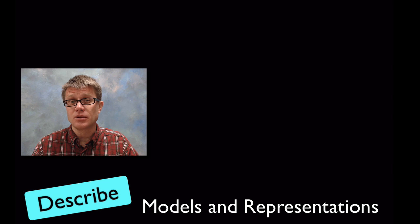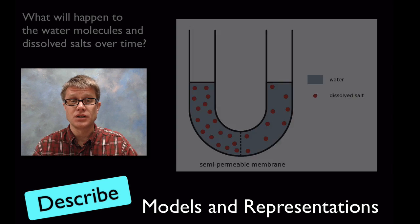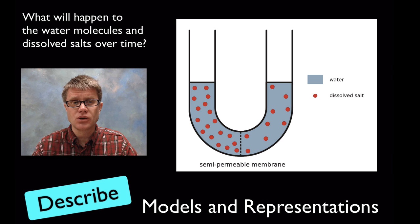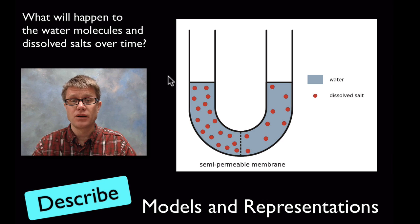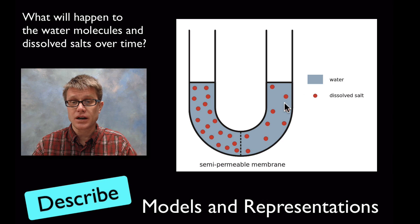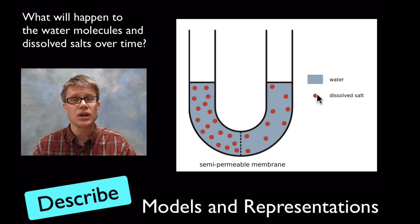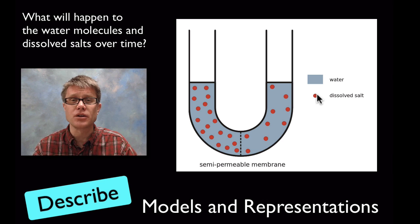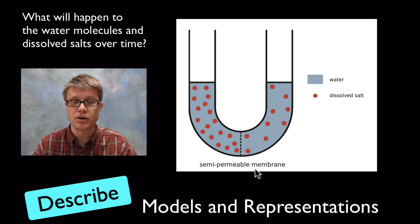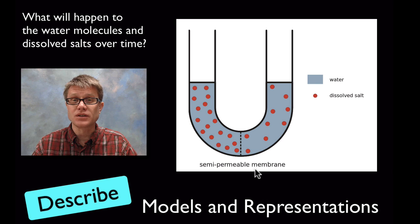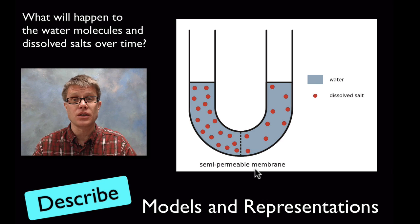Let's go to the next thing they'd like you to be able to do. They want you to be able to describe a model or a visual representation. Well here's a question. What will happen to the water molecules and dissolved salts over time? So we have a U tube over here on the side. You could look right here that we've got water which is going to be this bluish color. And then we have these dissolved salts. And so they're going to ask you what would happen over time? One other piece of evidence is that we've got a semi-permeable membrane down here. What does that mean? It's only going to allow certain things through. In this case it's only going to allow water to go through. So what would happen over time?